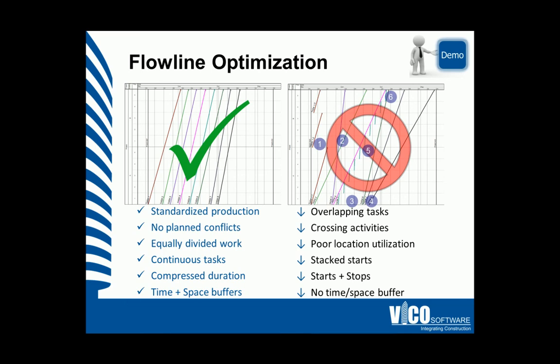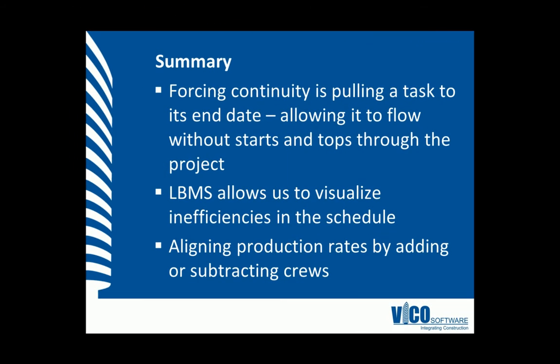We plan for no conflicts or crossing activities. We equally divide the work by location instead of using the locations poorly. We aim for continuous work and not stacked trade. We can compress the duration without introducing the risks of starts and stops. And we can use time and space buffers to mitigate project bottlenecks. This vignette has taught you that forcing continuity is pulling a task to its end date, allowing it to flow without stops and starts through the project. Location-based management systems allow us to visualize inefficiencies in the schedule, and we can use this visualization to align the natural production rates of the tasks by adding or subtracting crews.